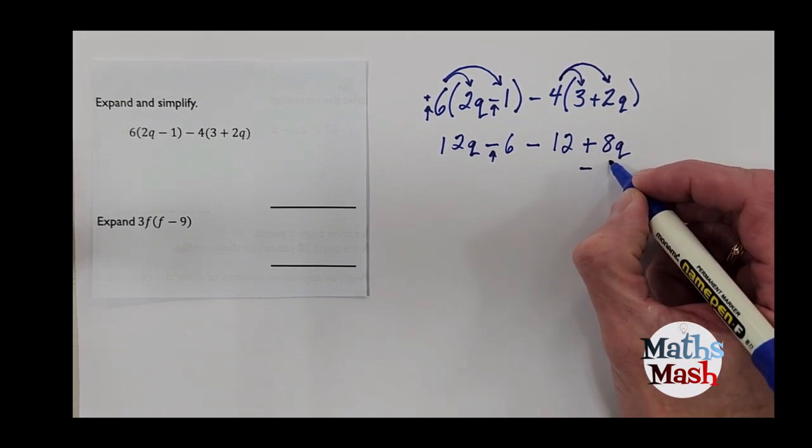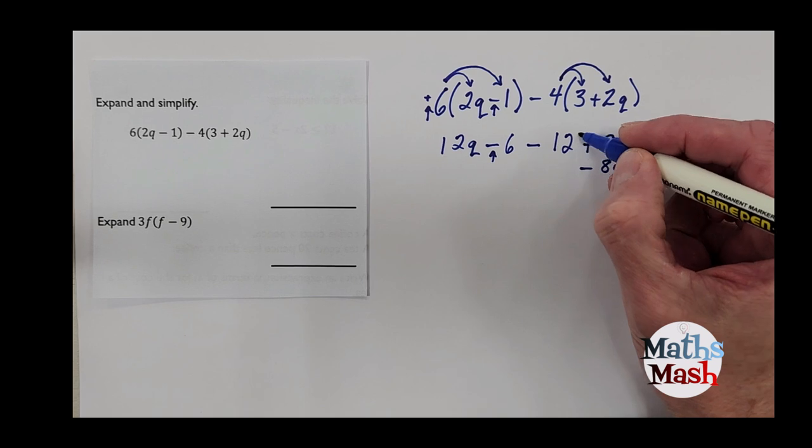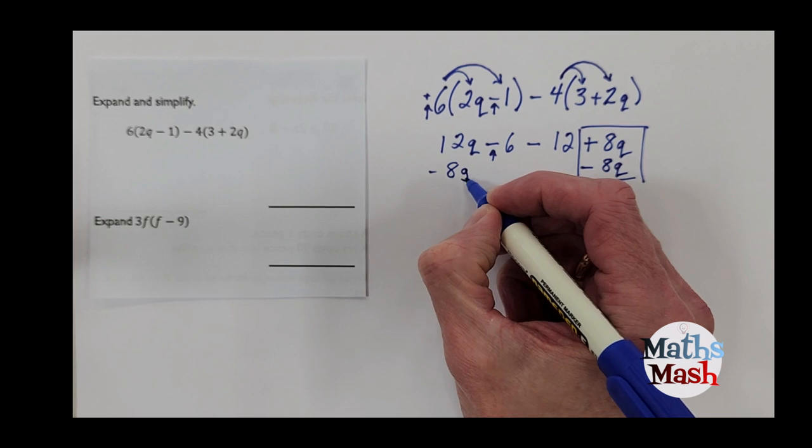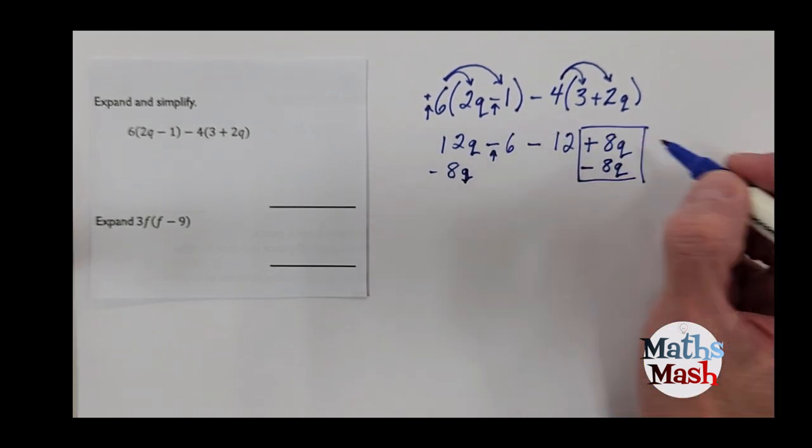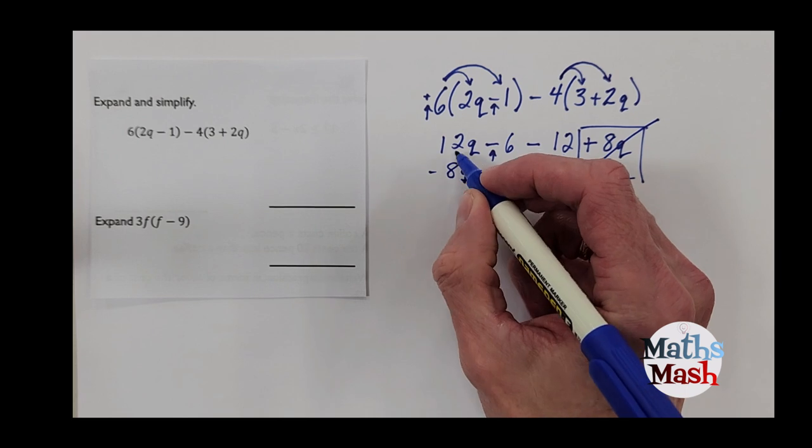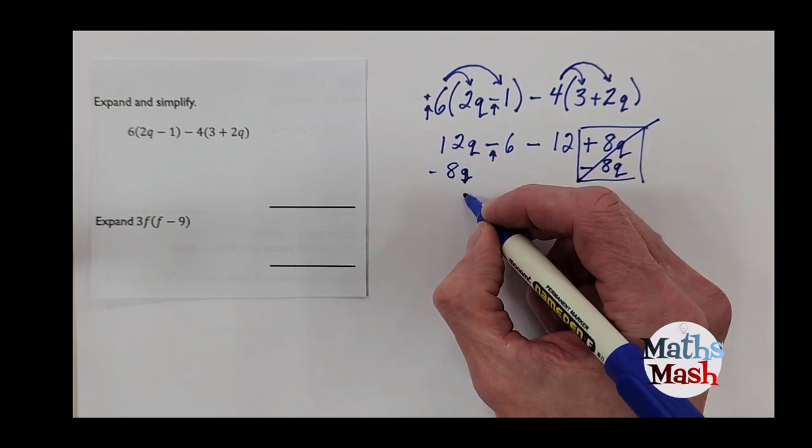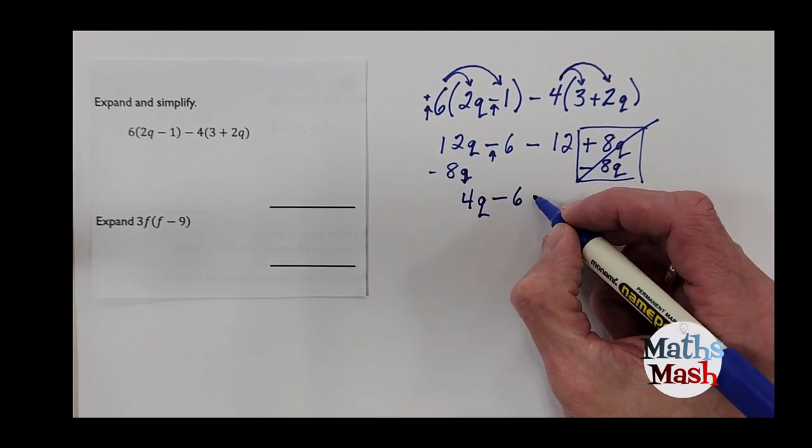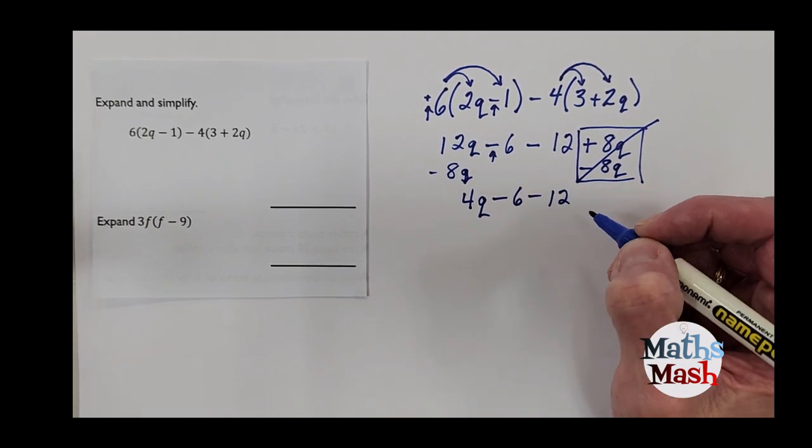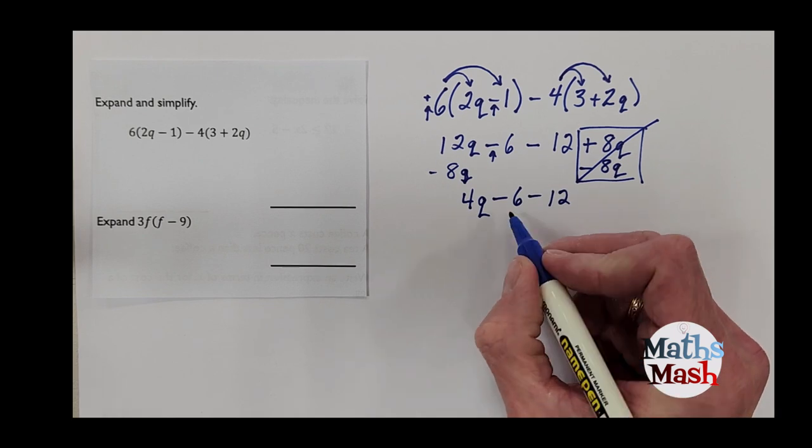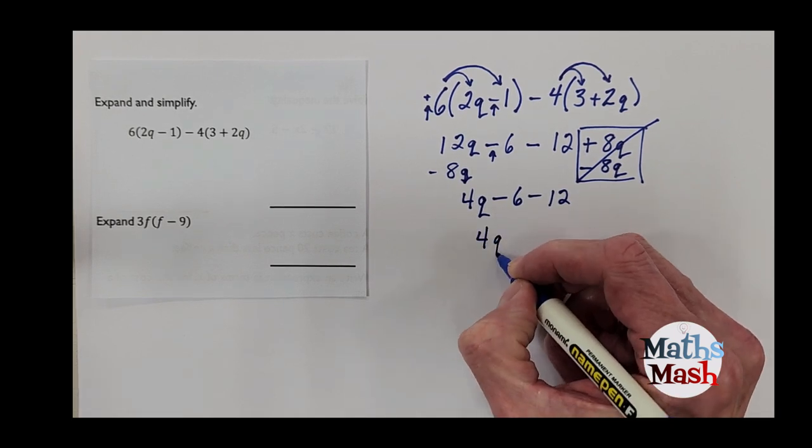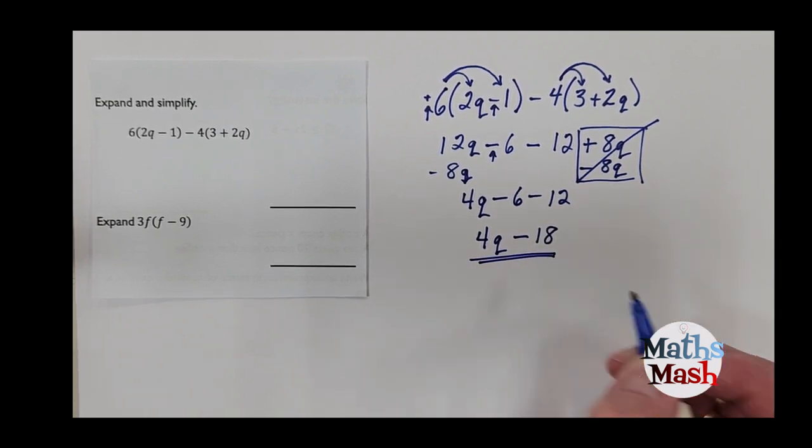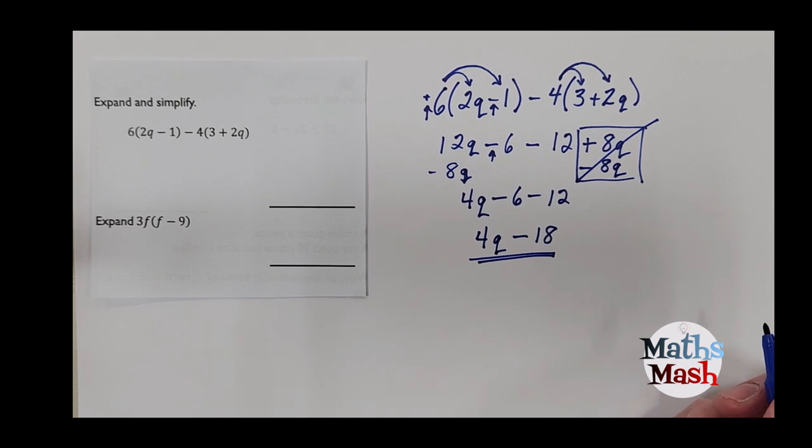Okay, so now I've got rid of the brackets and I'm going to start getting rid of the 8. So I subtract 8q from both sides. All right, now the positive 8q and the negative 8q cancel each other out. So now I'm left with 12q subtract 8q gives me 4q subtract 6 minus 12. Okay, so I've got 4q negative 6 negative 12. That's going to give me negative 18. All right, and that's my expand and simplify.